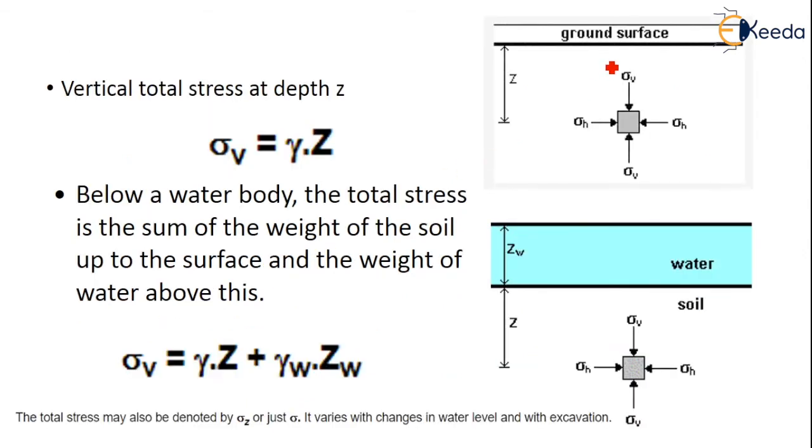See this is a ground surface. If you consider a block, stresses are in this direction. Vertical total stress as the depth is considered as Z. So sigma V is equal to gamma into Z. Z is a vertical stress.